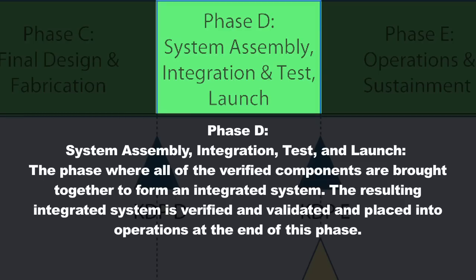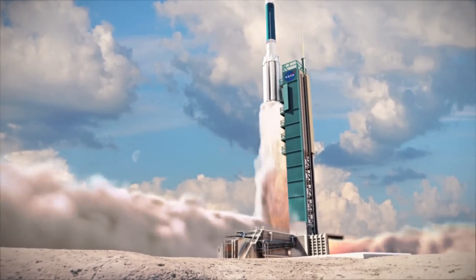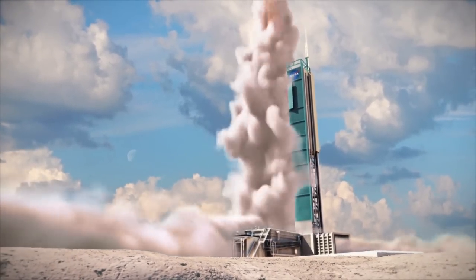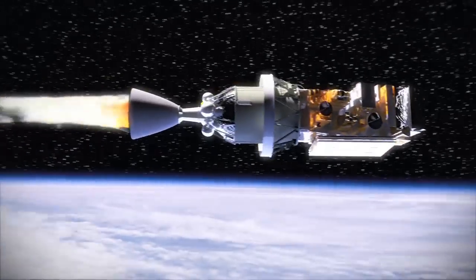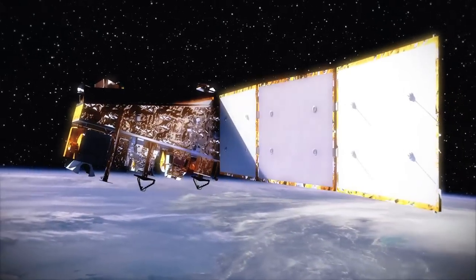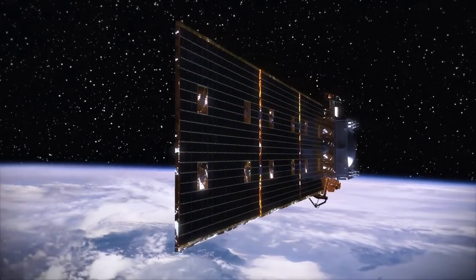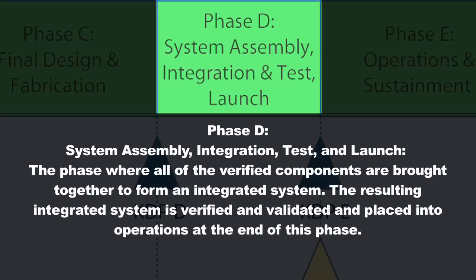Once this process is completed, you've got a system that's ready to deploy and put into operation. At the end of Phase D, for a satellite, you're going to launch the system and do some on-orbit verification and validation — confirming that the system tested on the ground still meets all requirements in the real space environment. There'll be an on-orbit verification, marking the end of Phase D, where you confirm the system is ready to enter its operational phase, which is Phase E.